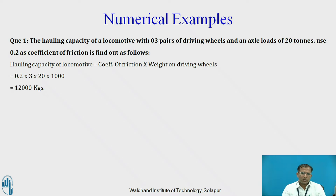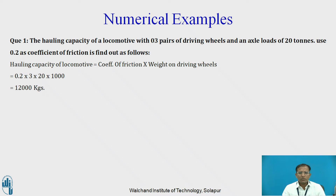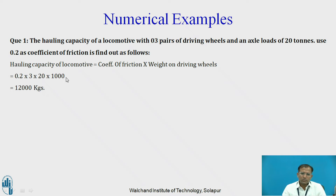Now we will go to solving an example on calculation of hauling capacity of the locomotive. Here, 3 pairs of driving wheels are given, each with an axle load of 20 tons, and coefficient of friction is 0.2. Hauling capacity is the product of coefficient of friction, weight on driving wheels, and number of pairs of driving wheels — that is 0.2 into 3 into 20 tons, multiplied by 1000 to convert tons into kilograms, giving 12,000 kg as the total hauling capacity.